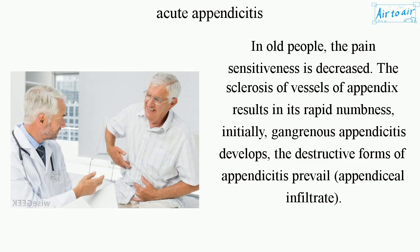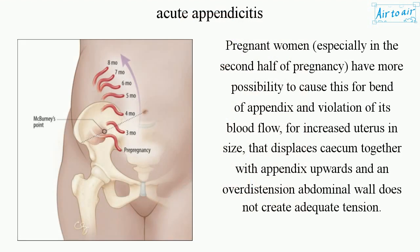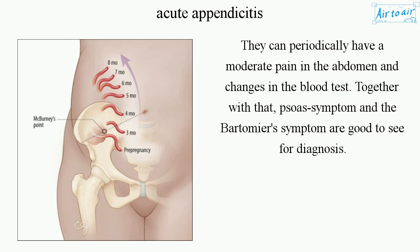Pregnant women, especially in the second half of pregnancy, have a higher possibility of appendicitis due to bending of the appendix and violation of its blood flow caused by the increased uterus size, which displaces the cecum together with the appendix upwards, and an over-distended abdominal wall does not create adequate tension. They can periodically have moderate abdominal pain and changes in blood tests. The PSOAS symptom and Bartomere's symptom are useful for diagnosis.